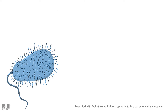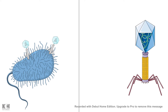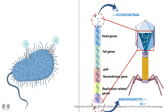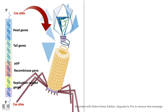Let's understand the phage biology first to understand cosmids and how they were developed. We know that bacteriophage can infect bacteria with high efficiency. If we look at the genome of these bacteriophage, they are DNA with several genes, but the ends of the phage genome are extremely sticky — these are called cohesive sites or cos sites. These cos sites help the phage to package inside its head.